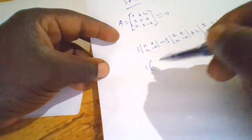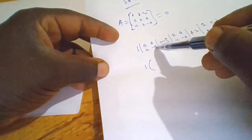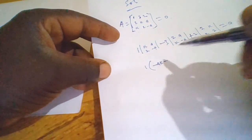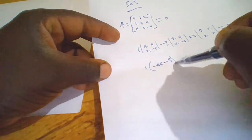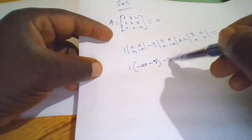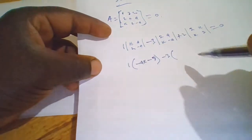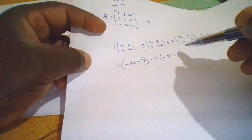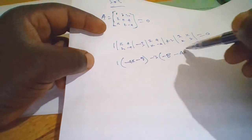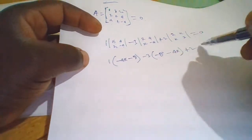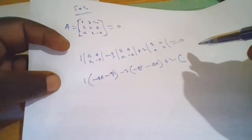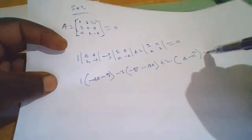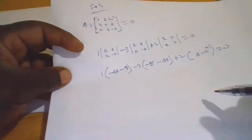So we have: 1 times (k×(−4) − 2×4) = 1 times (−4k − 8), minus 3 times (2×(−4) − k×4) = minus 3 times (−8 − 4k), plus 2 times (2×2 − k×k) = plus 2 times (4 − k²). This equals 0.